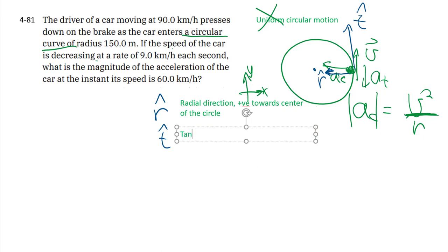And then we have t-hat—not time, but the tangential direction—and it is at all times positive in the direction of the velocity, even as the velocity changes as it goes around the circle. In the sense that if you have a positive acceleration, then your speed will be increasing because it will be in the same direction as your velocity.